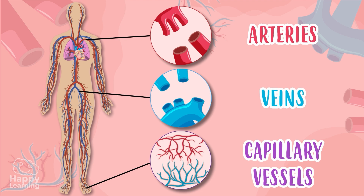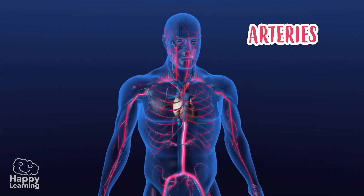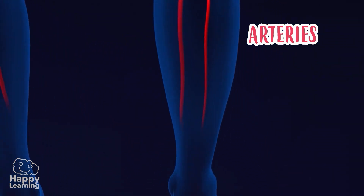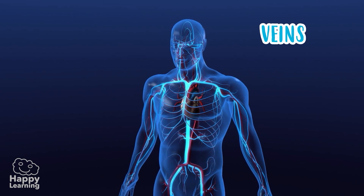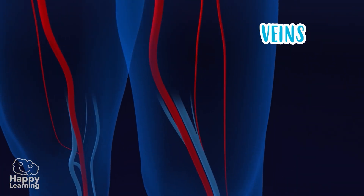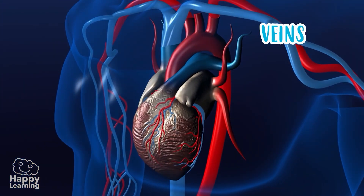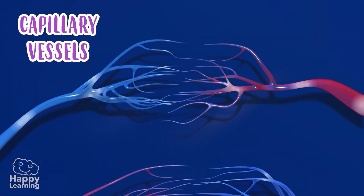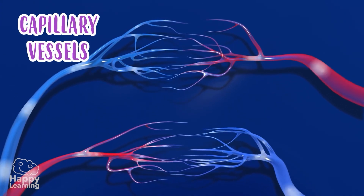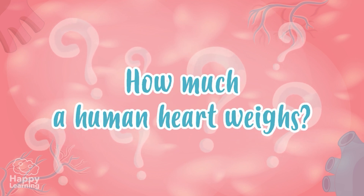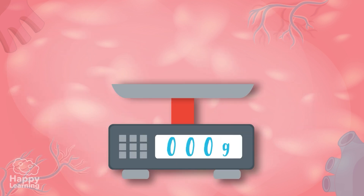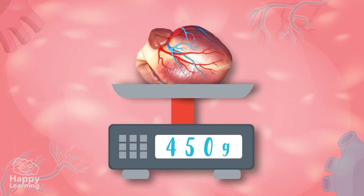Arteries deliver oxygen- and nutrient-rich blood to all our organs and body. Veins take that blood, now low in oxygen, back to the heart. And the capillary vessels, which are very small, connect arteries with veins and cells.